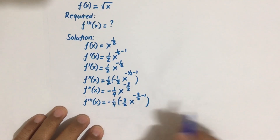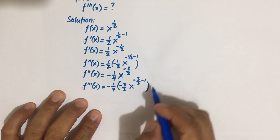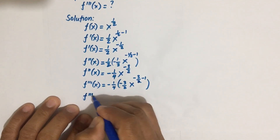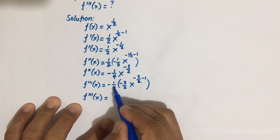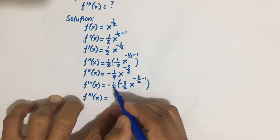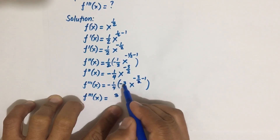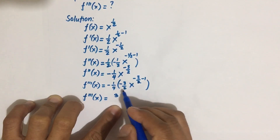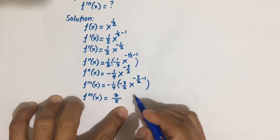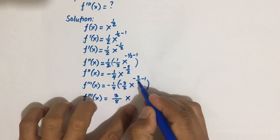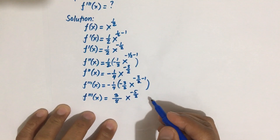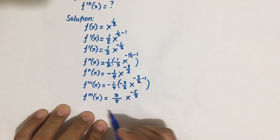Negative three-halves minus one equals negative five-halves. So f triple prime of x equals negative one-fourth times negative three-halves — which gives positive three-eighths — times x to the power negative five-halves. That is our f triple prime.